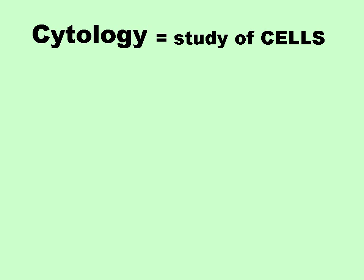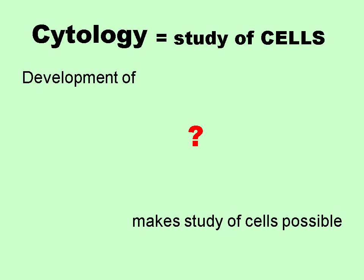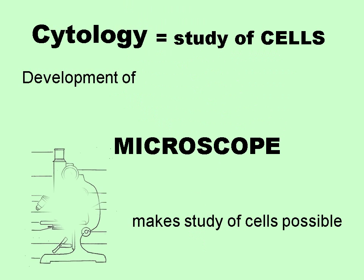In order to study cells, we have to have a particular piece of technology. What do we need to be able to do in order to study these cells? Of course, we need microscopes. Cells being rather small — at least the vast majority of them anyway — you need a microscope in order to see them.